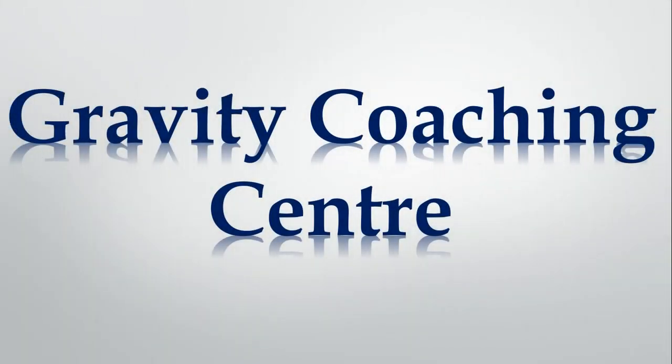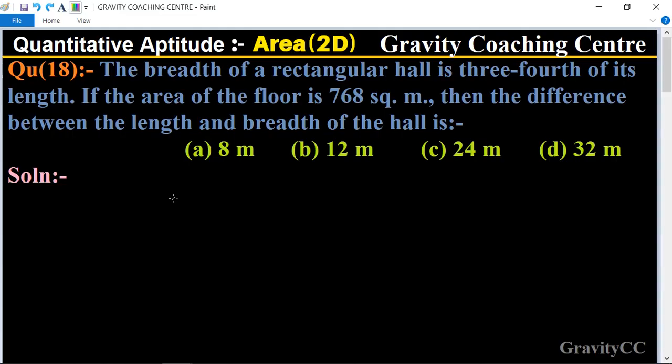Welcome to our channel, Gravity Coaching Center. Quantitative Aptitude, Chapter Area, Question Number 18: The breadth of a rectangular hall is three-fourths of its length. If the area of the floor is 768 square meters, then the...